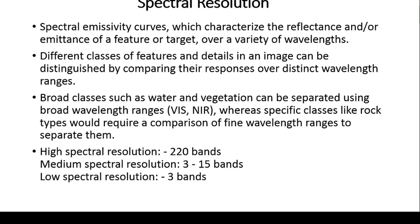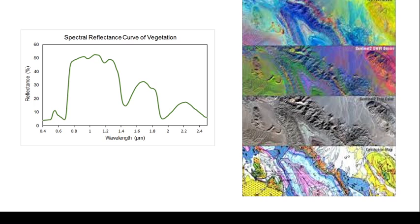At low spectral resolution, only three bands are used — mostly visible bands: green, blue, and red — giving very broad wavelength ranges, so only broad classes can be classified. To differentiate within very specific or minor classes, we use high spectral resolution with 220 bands. For example, making a spectral reflectance curve of vegetation: at 0.4 micrometers (blue) the radiation is absorbed, at 0.5, 0.6, and 0.7 other wavelengths are also absorbed, and only the green color is reflected, so the vegetation spectrum appears green.